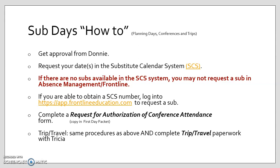On the flip side, if you are able to obtain a SCS number, you're good to go. Log into Frontline to request a sub. Complete a request for authorization of conference attendance form — which we call a conference form — and turn it in to me. A copy of this form is included in your packet. You will follow these same procedures for trip travel, but you'll work with Trish to complete trip travel paperwork as well.